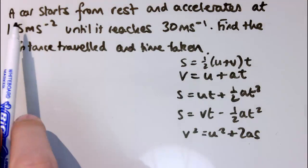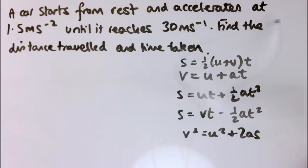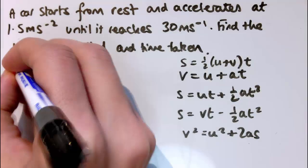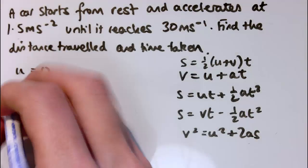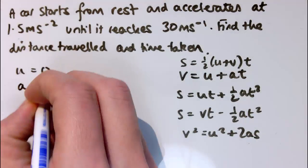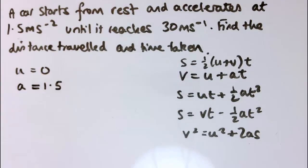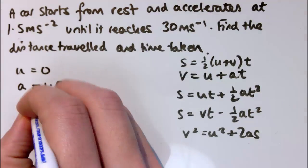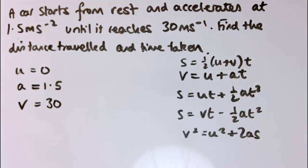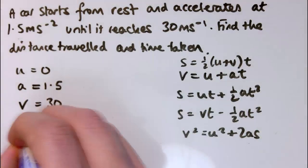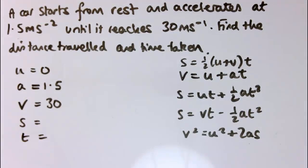Let's have a look at how we'd solve a problem. A car starts from rest, so starting from rest means that u, the initial velocity, is 0, and it accelerates at 1.5 metres per second squared until it reaches 30 metres per second — that's the final velocity v equals 30. I don't know s or t, and those are the two things we want to work out. Let's start by working out s.